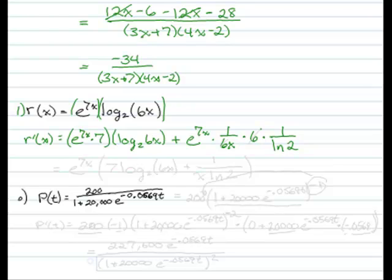Let's see what kind of simplifying we can do. The 6s will cancel. And we can pull an e to the 7x out. So we pull the e to the 7x out. So, we are left with 7 log base 2 of 6x plus, now we pulled the e to the 7x out, 1 over x times the natural log of 2. And that's going to be about as much simplifying as we can do there.